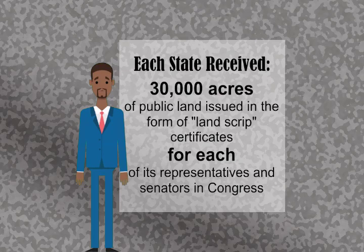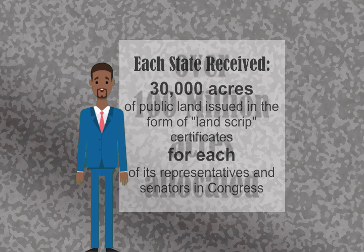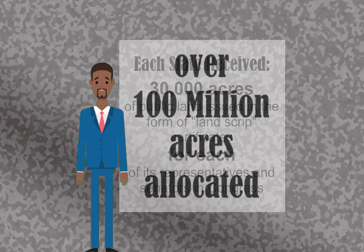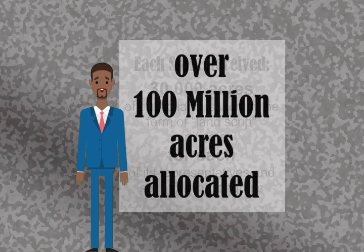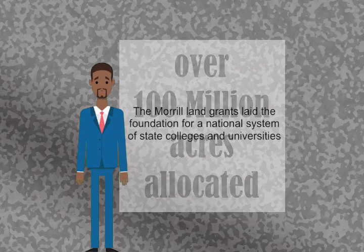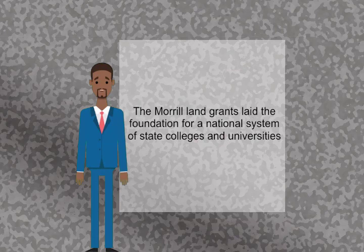These land scripts could be sold in various ways and the proceeds could be allocated for public colleges. The United States land grants grew to an allocation of over 100 million acres. The Morrill Land Grants laid the foundation for a national system of state colleges and universities.